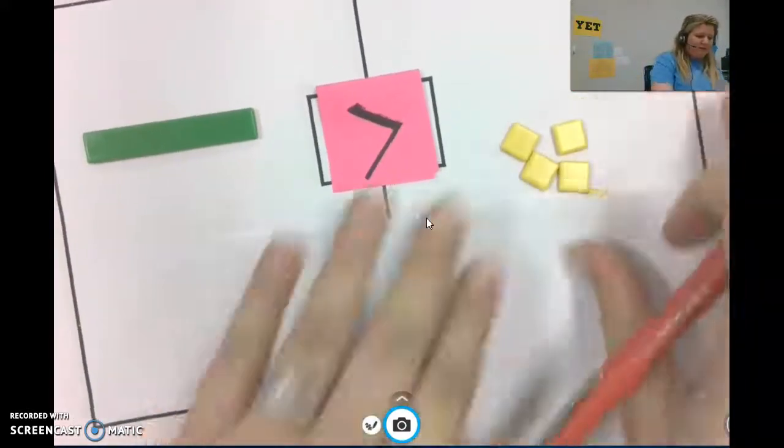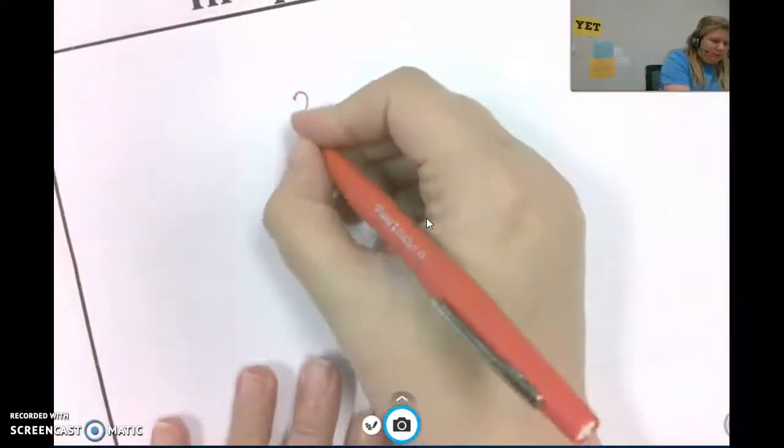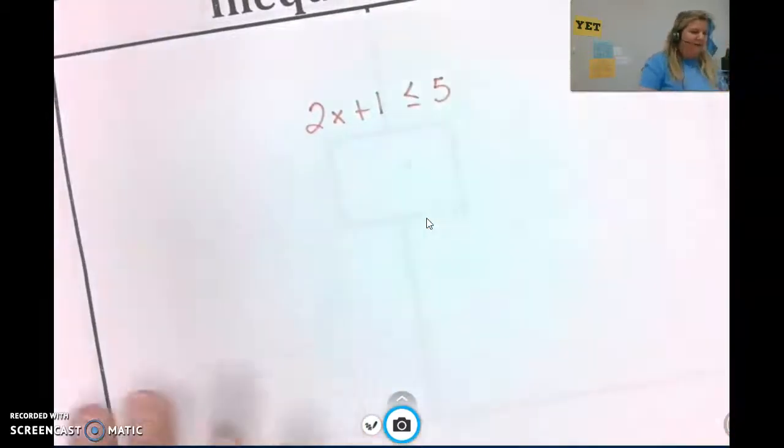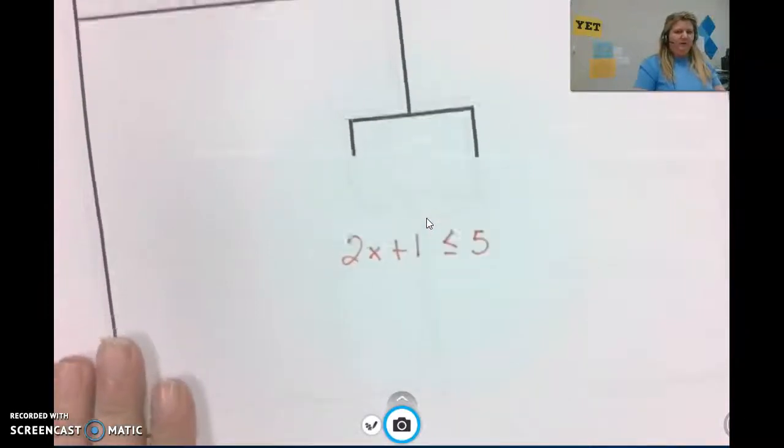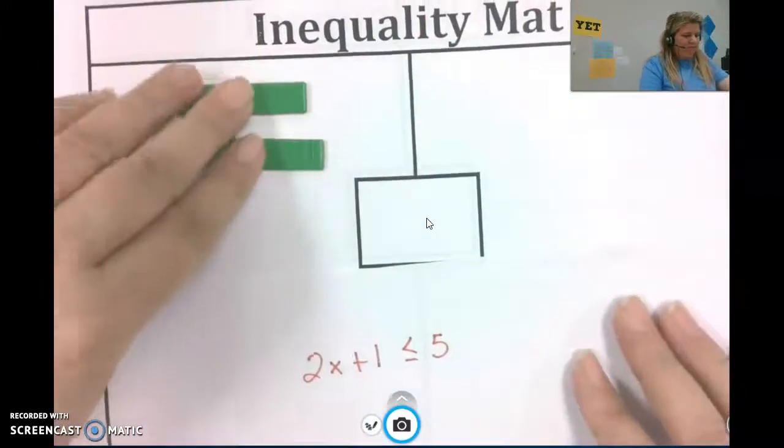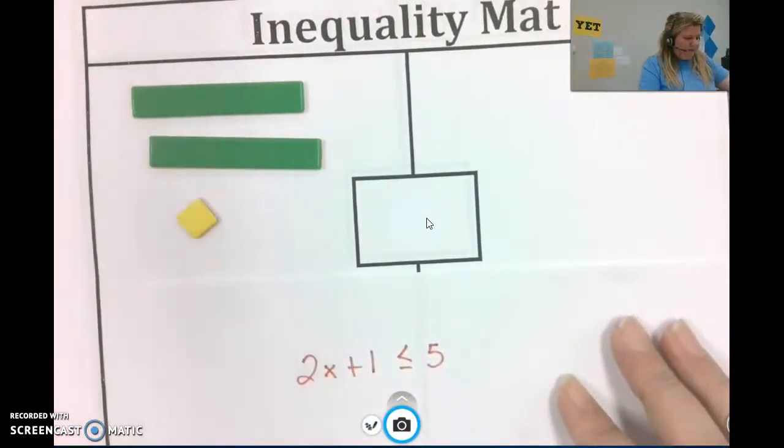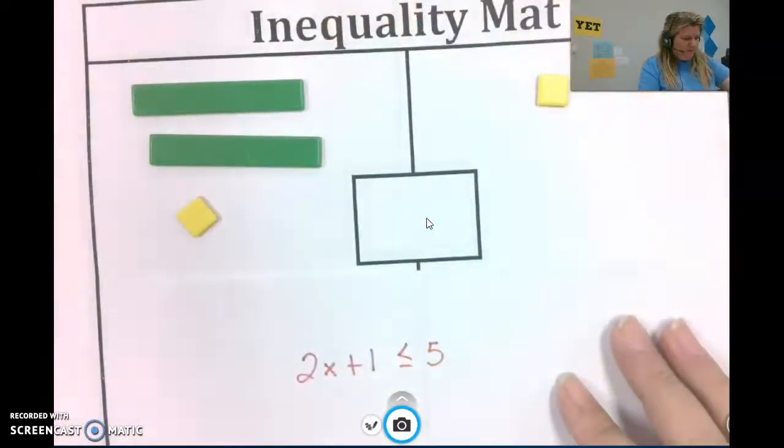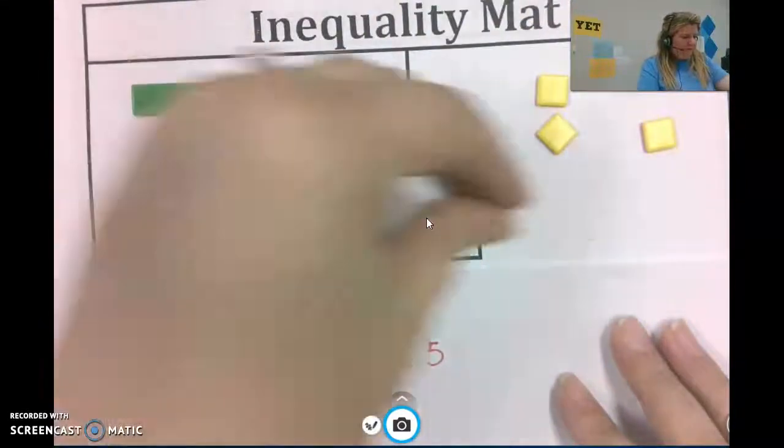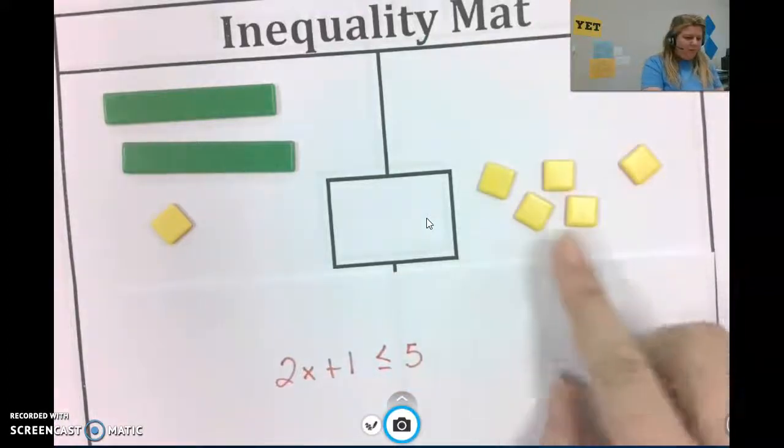Okay, so let's move on to our next problem. This time we're going to clear this off. We're going to have a coefficient other than 1. So we're going to do 2x plus 1 less than or equal to 5. So the first thing I would do, let's get that down, I would need to remove 1 from each side. Because I'm trying, my goal is to isolate this variable.